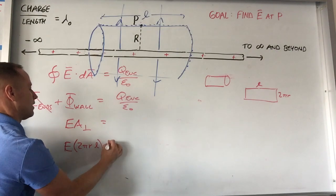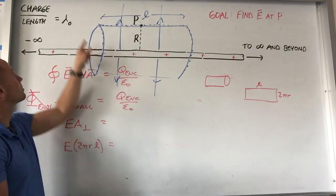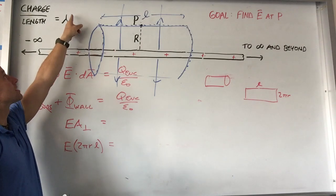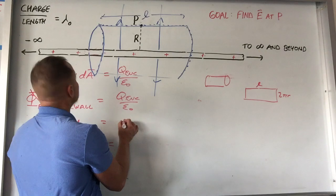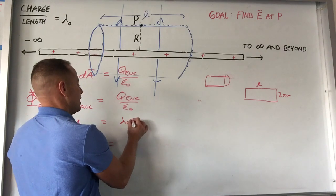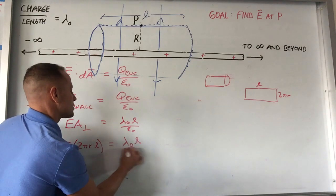Now what we got to do is work on how much charge is inside this thing, Q enclosed. Well, the charge per length is lambda naught. Well, so it's just gonna be charge per length times length. So it's just gonna be lambda naught L over epsilon naught. So I'm gonna put that down here, lambda naught L over epsilon naught.